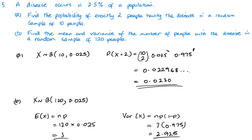That's it for these questions, although for part b it would have been slightly better to use a different variable — since we have a different value of n, it would be more appropriate to use Y instead of X for the new distribution. It shouldn't really affect your marks, but changing the letter when the distribution changes is the more appropriate thing to do.